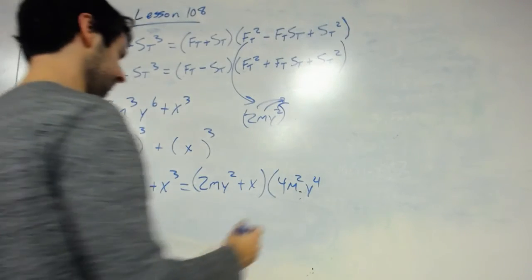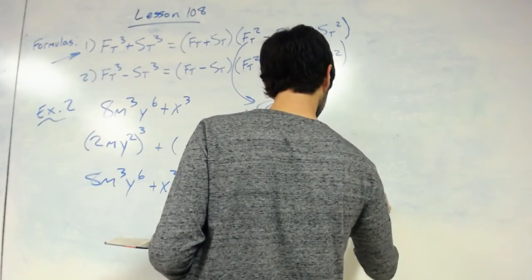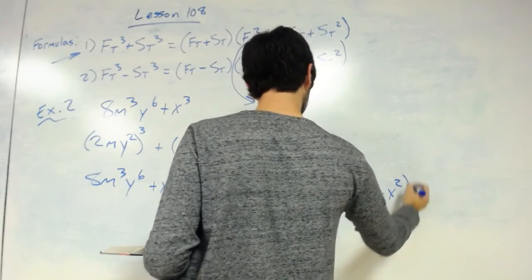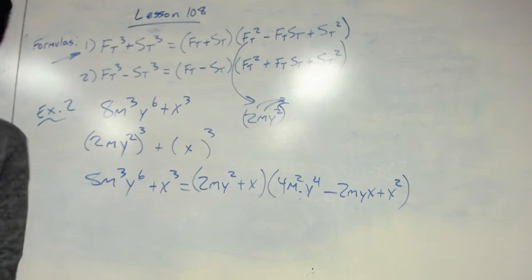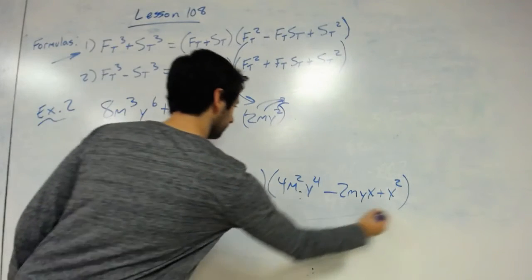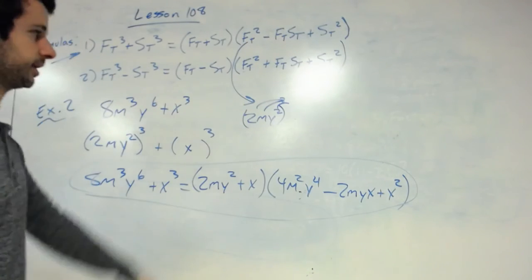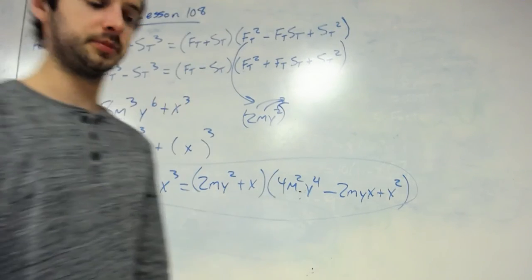And then you would have minus 2my times x plus, and it's just x squared. Because it's a long variable. And so from that point, you have your answer. It looks long, but really it's not a complicated process as long as you know the formula. And that's how you do factoring by cube.